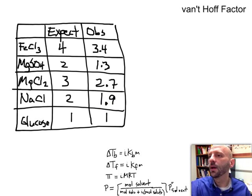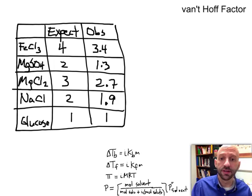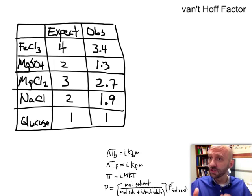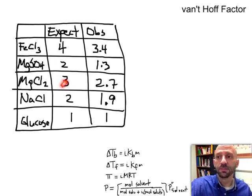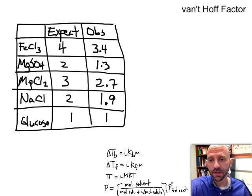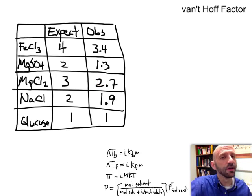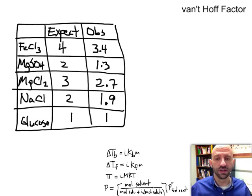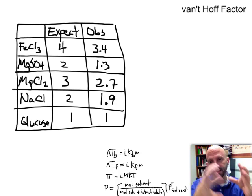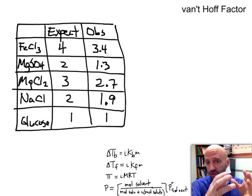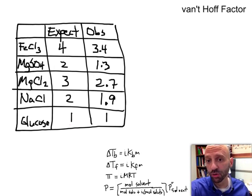Or take magnesium chloride here. Magnesium chloride is made out of 3 ions. So theoretically you would expect the boiling point and freezing point and osmotic pressure to be influenced by a factor of 3. But it turns out when you actually measure the values, they're only influenced by a factor of 2.7. And you can see that for some other values as well. Now for glucose, which is not ionic, it does not separate, it stays as a glucose molecule. We would expect a value of 1 for the van't Hoff factor and that's exactly what we see.